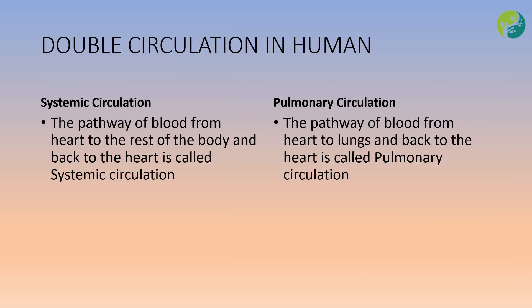The blood circulatory system in humans is an example of double circulation, in which blood travels twice through the heart per complete cycle. Systemic circulation refers to the pathway of blood from the heart to the rest of the body and back. Pulmonary circulation refers to the pathway of blood from the heart to the lungs for oxygenation and back to the heart. Together, systemic and pulmonary circulation make up the double circulation in the human circulatory system.